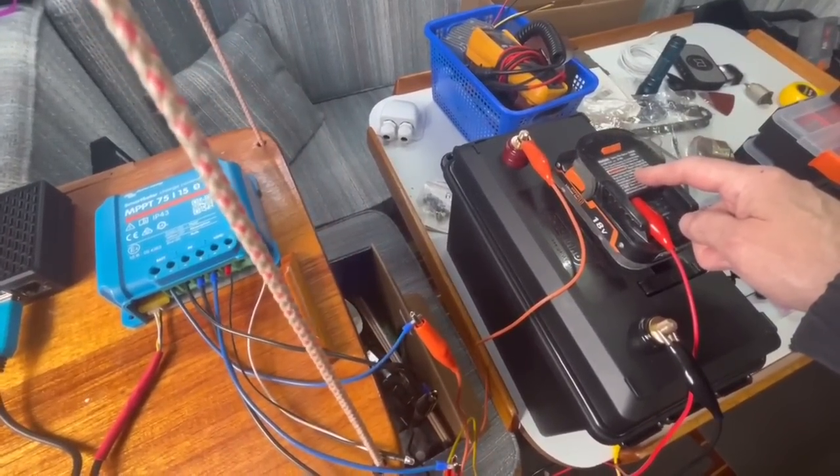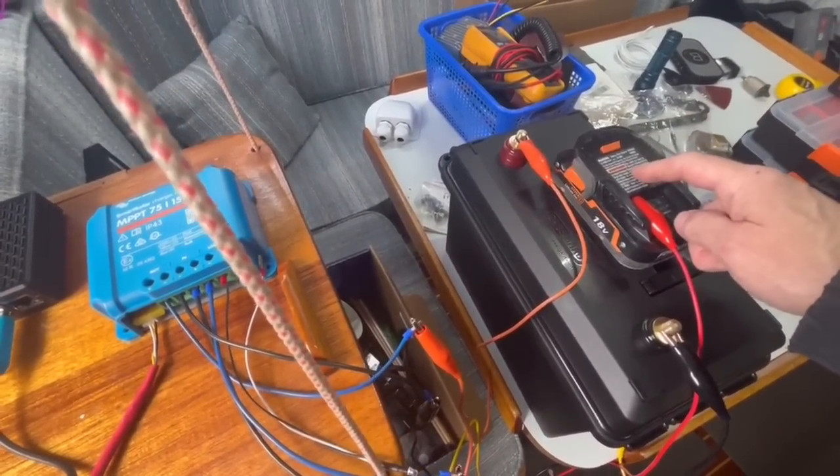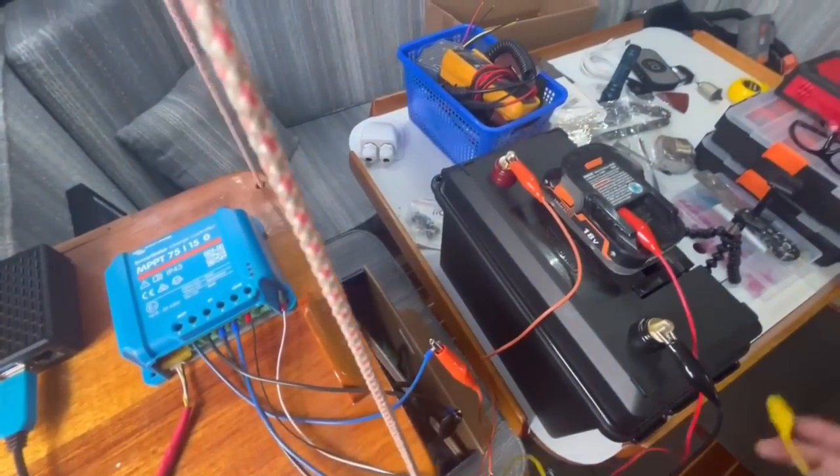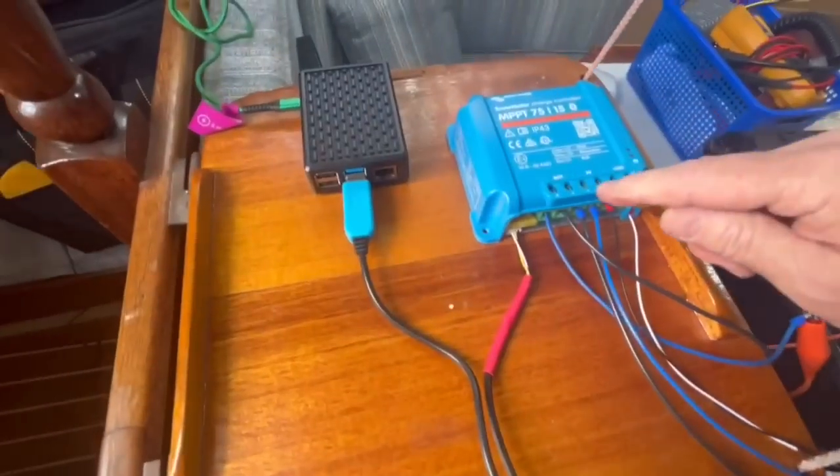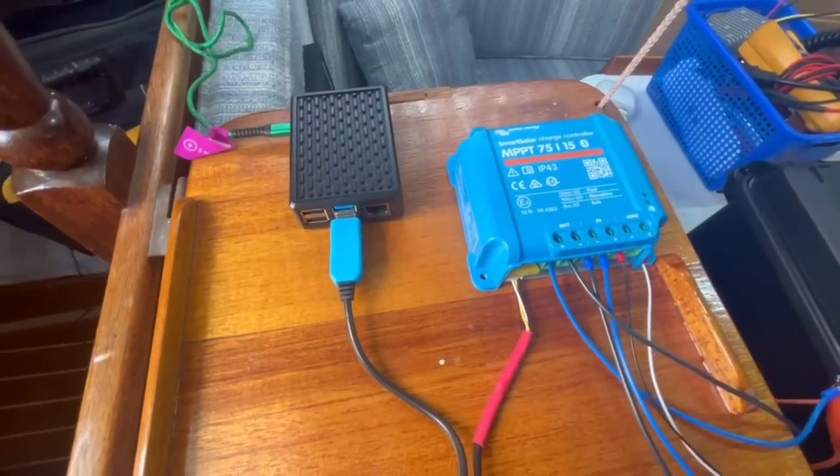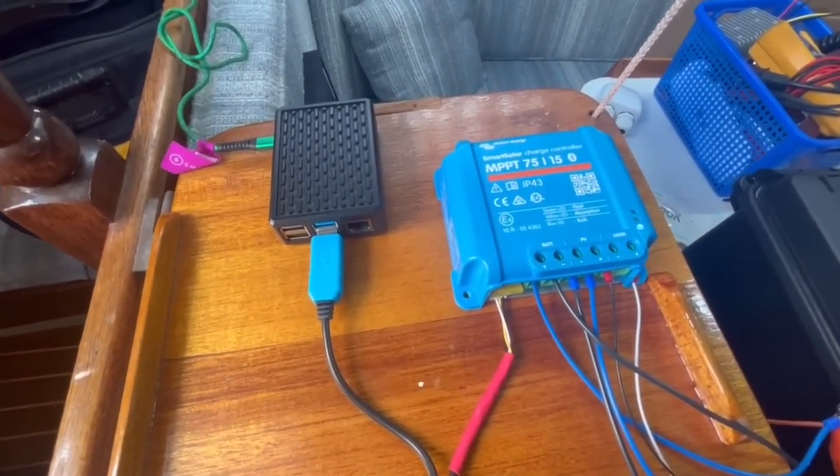So I don't have a solar panel hooked up to this charge controller. I'm just going to use a battery that's a higher voltage which works just fine. So I just use a jumper. I just connected it to the PV source and now it thinks it's got solar source connected to it.